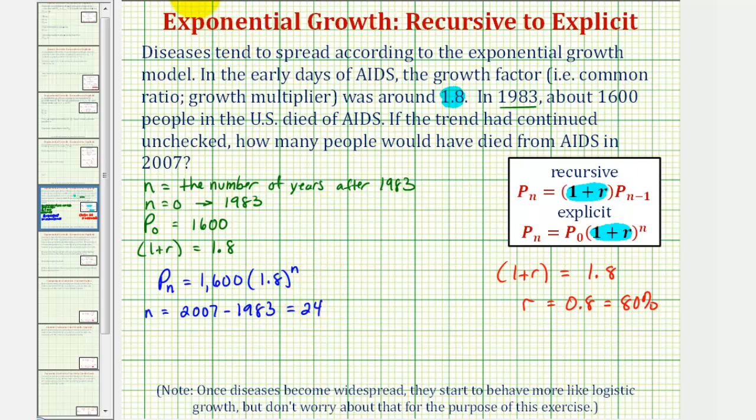To answer this question, we want to determine p of 24. Which means we'll substitute 24 for n, so we'd have 1,600 times 1.8 raised to the power of 24.